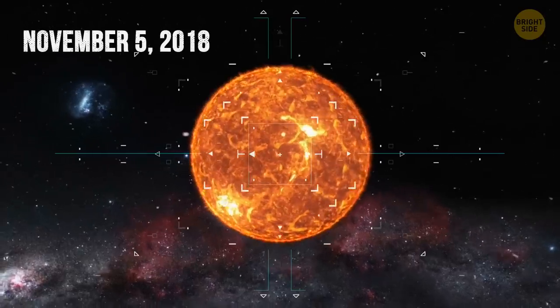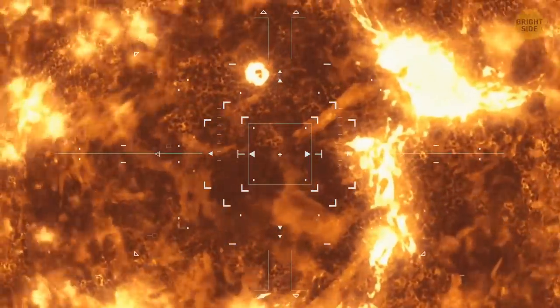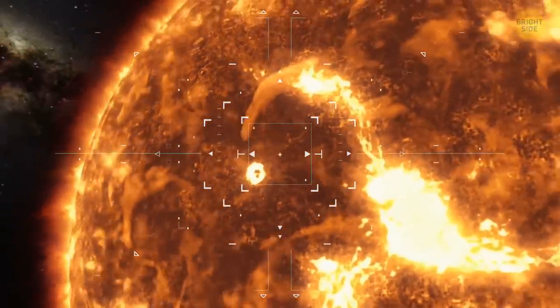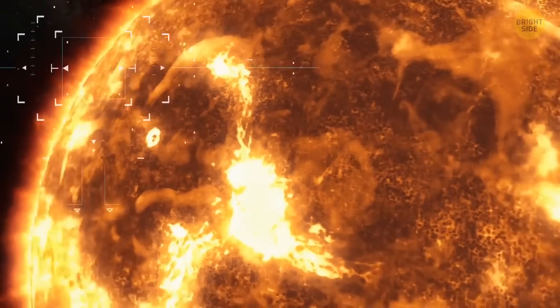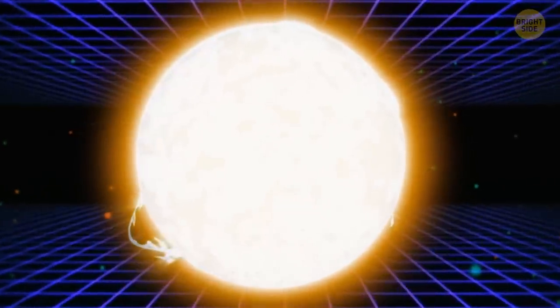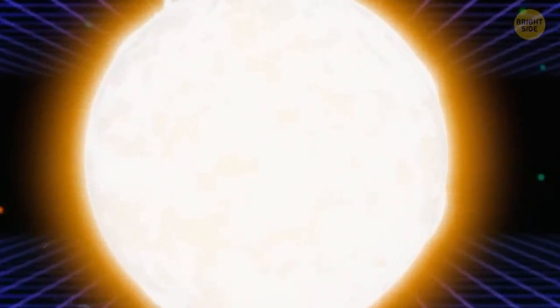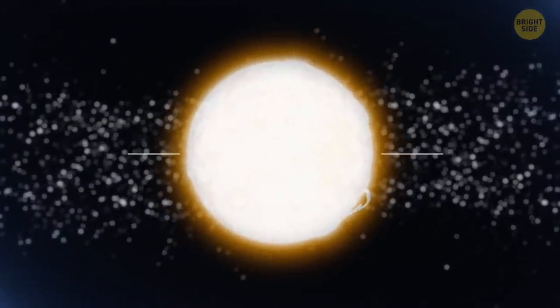And on November 5, 2018, the Parker Solar Probe made its first approach to the Sun. Before touching its surface, the spacecraft had to enter the star's orbit first. To achieve this, it did even more gravitational maneuvers. Only after that did it start circling the Sun, the heaviest object in the solar system with the most powerful gravity. So, it'll give the probe an incredible amount of acceleration with each flyby.